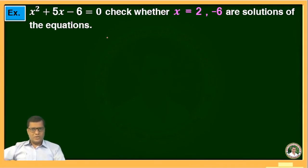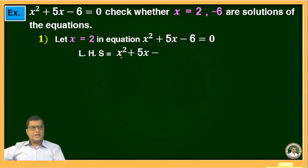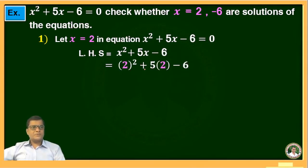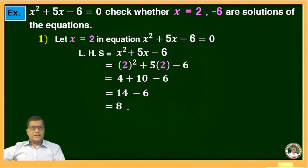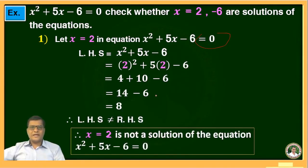First, let x = 2 in the equation x² + 5x − 6 = 0. LHS = x² + 5x − 6 = (2)² + 5(2) − 6 = 4 + 10 − 6 = 8. Since 8 ≠ 0, LHS is not equal to RHS. Therefore, x = 2 is not a solution of the given quadratic equation.